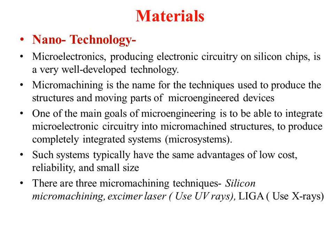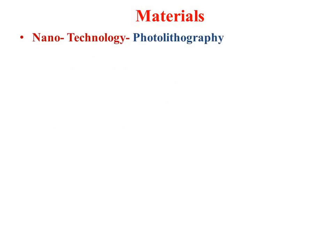There are three types of micromachining techniques: silicon micromachining, excimer laser, and LIGA. Silicon micromachining uses the silicon surface; excimer laser uses ultraviolet rays; and LIGA uses X-rays. The first technique in nanotechnology we will discuss is photolithography.